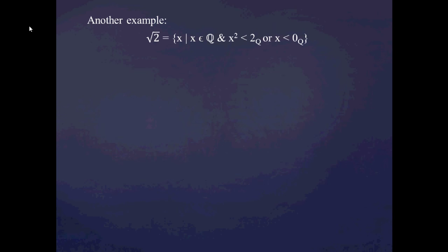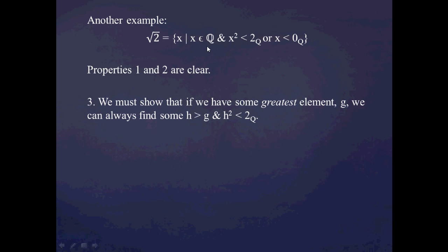Let's go back to the example of the square root of 2 represented as a Dedekind cut, and show that this set as defined is also a Dedekind cut. Properties 1 and 2 — that the set is not all of Q, has something in it, and is closed downward — are pretty clear.